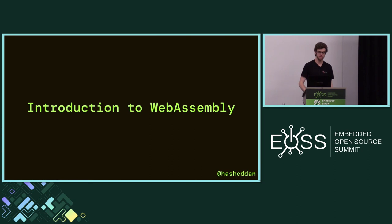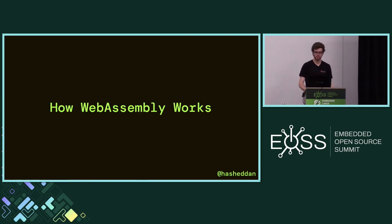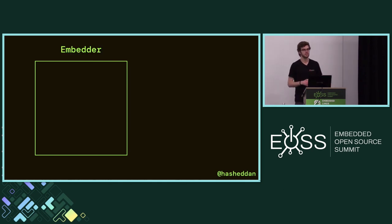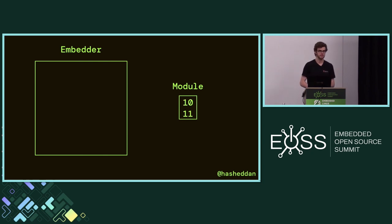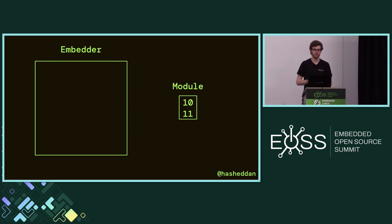Let's go ahead and jump into an introduction to how WebAssembly works. Effectively, in any environment where you're going to be running WebAssembly, you start out with what the spec refers to as an embedder. This is basically the host environment in which a WebAssembly module or multiple WebAssembly modules are going to run. In order to run a WebAssembly module, you need to get a binary representation of that module — that could be anything from on disk to fetched over the network.